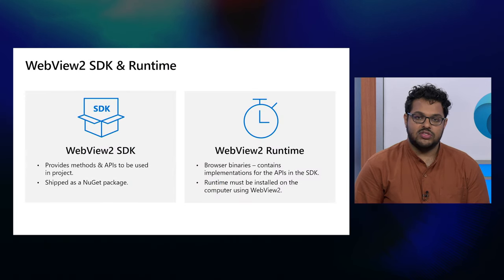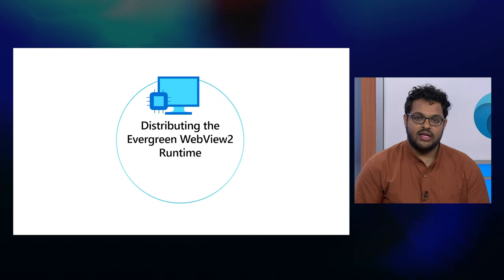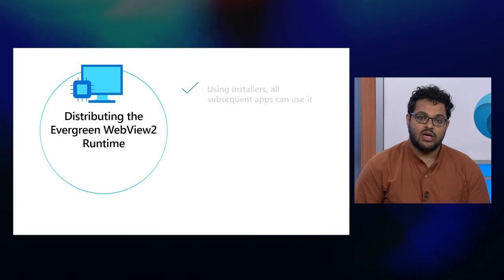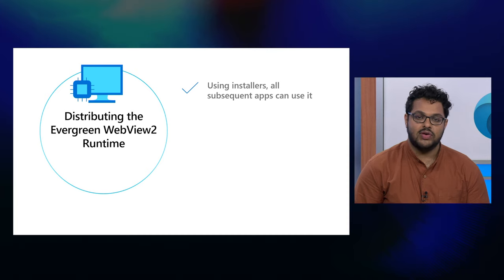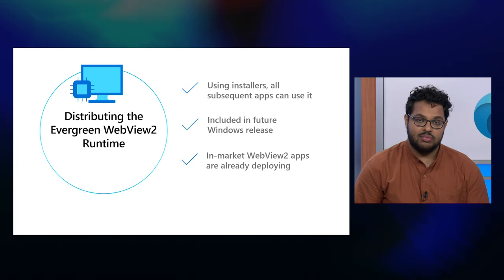Since Build 2020, we've also introduced the WebView2 runtime, which the WebView2 SDK depends on. The runtime contains the actual browser binaries and the implementations for the APIs in the SDK, and separates out your app and its dependencies from the Edge browser. With the Evergreen distribution model, your app will depend on a shared system runtime. The Evergreen runtime will be part of a future Windows release — you'll see it coming through Windows Insider Preview Builds soon. WebView2 apps like Office are already deploying the runtime, and we're currently seeing hundreds of millions of devices with the Evergreen runtime installed.